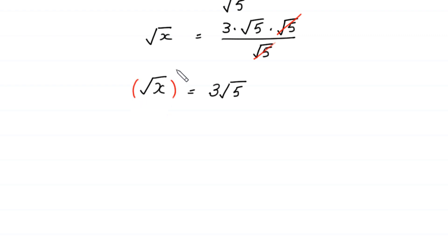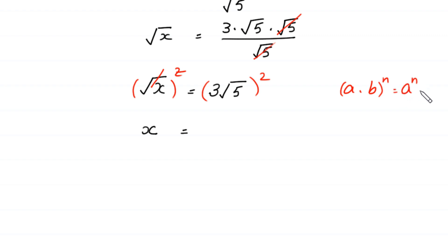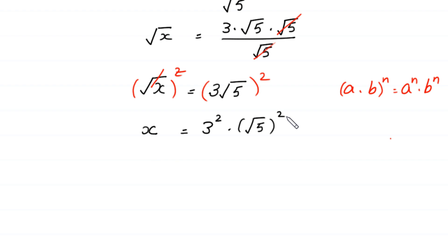We square both sides. The square cancels with the square root on the left, giving x. On the right, using (a·b)ⁿ = aⁿ·bⁿ, we get 3² × (√5)² = 9 × 5 = 45. So x = 45.